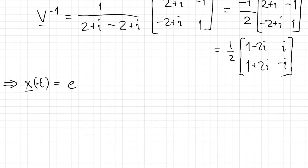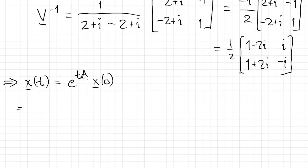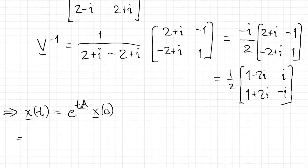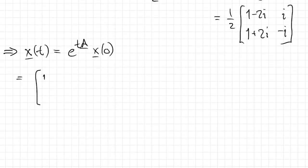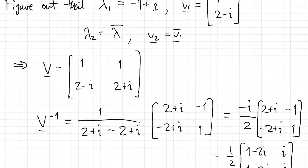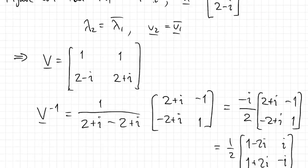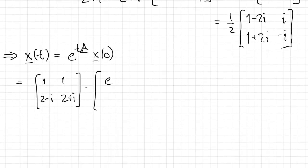The solution of the initial value problem is e to the tA times the initial x. I have to remind myself what V was. So there's V times the diagonal of the exponentials for the eigenvalues. Negative 1 plus i and negative 1 minus i in order. Times V inverse.